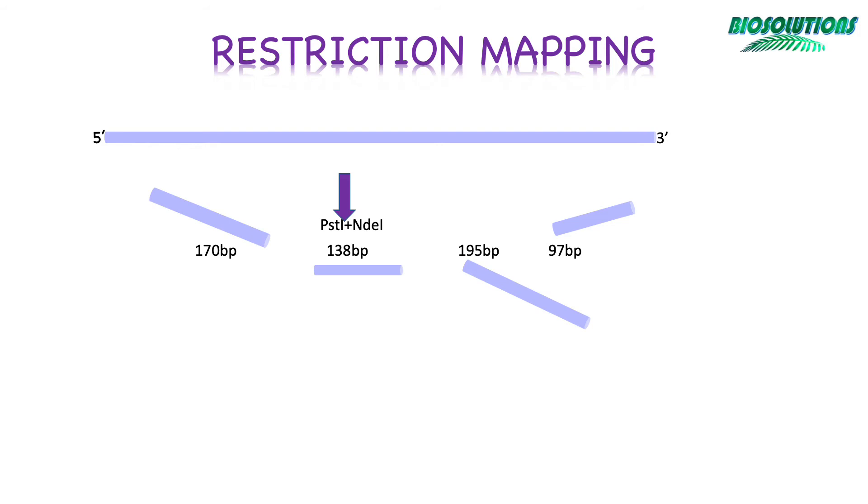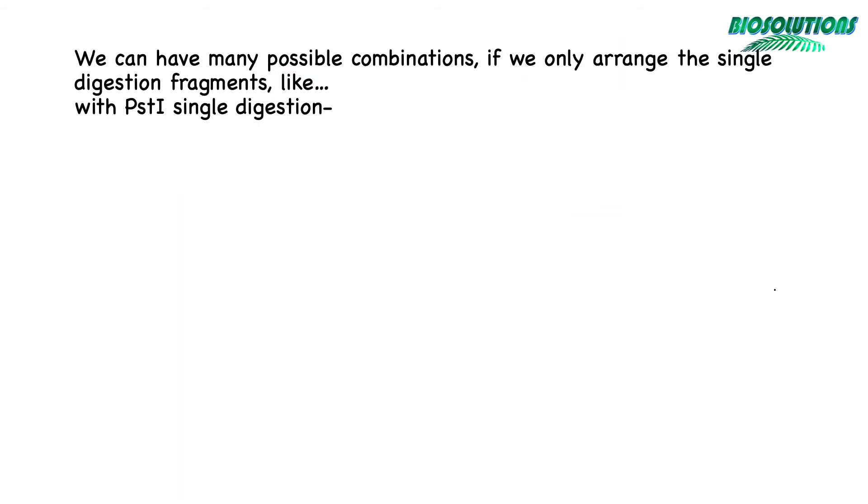Now we have the data to generate a restriction map. Let's place these on a linear map for individual enzymes first and then combine for double digest. Always remember that the total size of all the digested fragments should be equal to the size of the original DNA fragment. So here we generate the possibilities of restriction sites for PstI. Since it produces three fragments, we should have two restriction sites for this enzyme. But it is difficult to determine their locations using single enzyme digestion data only.